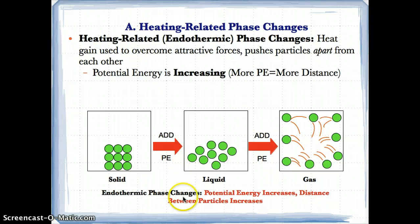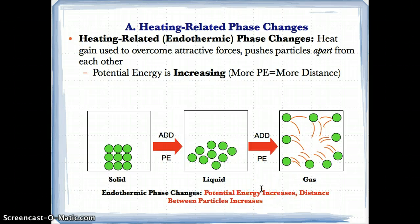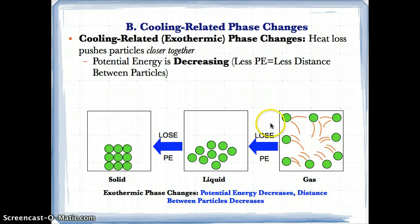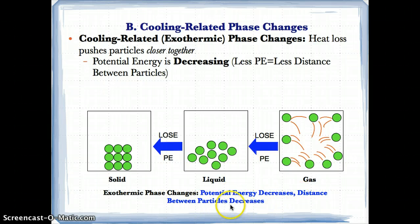Going from gas to liquid to solid are exothermic phase changes because you're losing heat, so you're losing potential energy, and because you lose potential energy, the distance between the particles decreases. Remember: endothermic means you gain heat — potential energy increases from solid to liquid to gas, and distance between the particles increases. The reverse is exothermic phase changes where you lose heat, lose potential energy, going from gas to liquid to solid, and the distance between the particles decreases from gas to liquid to solid.